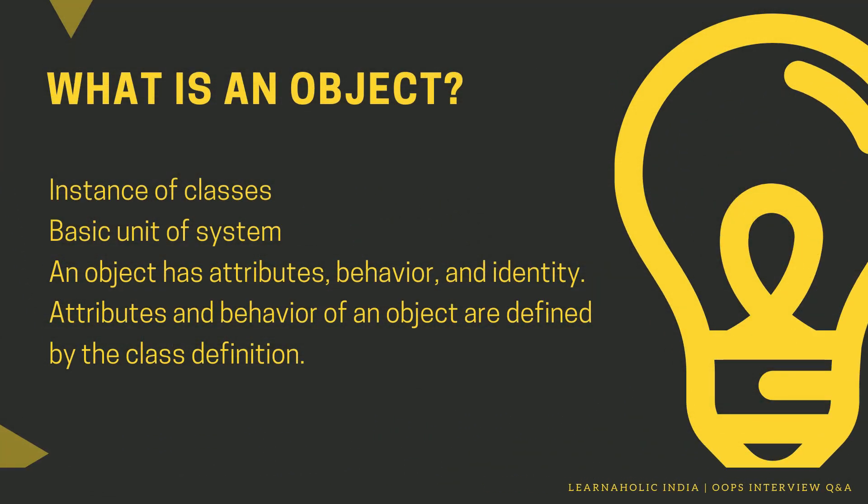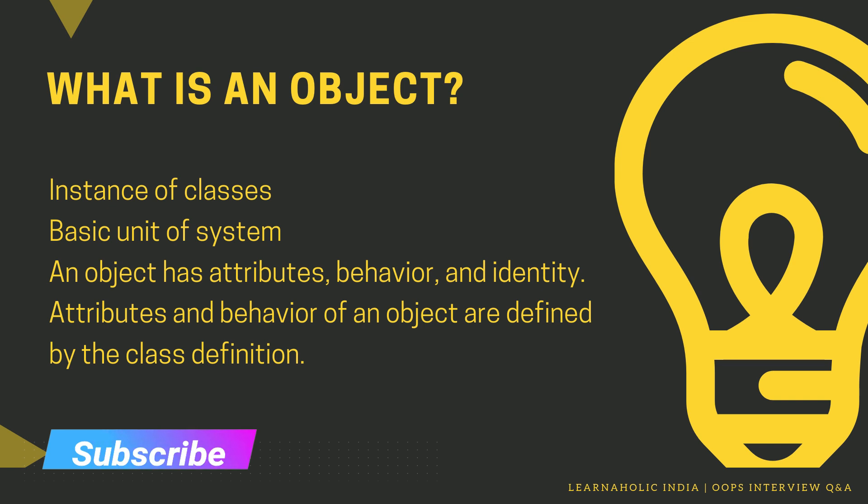The next question is: what is an object? An object is an instance of a class. It is the basic unit of the system. An object has attributes, behavior, and identity. The attributes and behavior of an object are defined by the class definition. In simple words, an object is a self-contained component which consists of methods and properties to make a particular type of data useful. Object determines the behavior of the class. When you send a message to an object, you are asking the object to invoke or execute one of its methods.